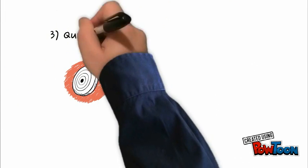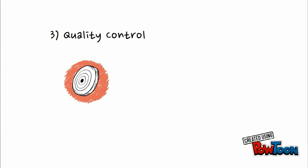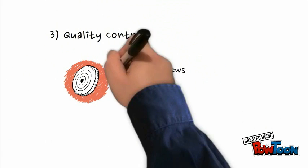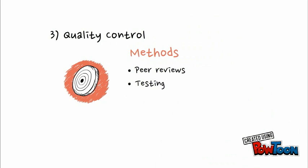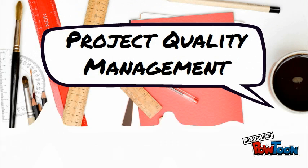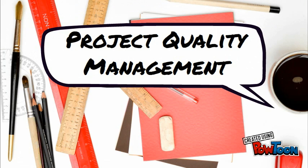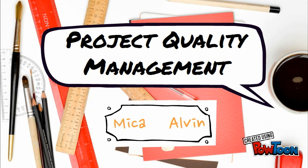Performing quality control is verifying that the product meets the quality requirements. Peer reviews and testing are two methods used to perform quality control, and the results will determine if corrective action is needed. And that's it for quality management — stay with us for the next module. By Micah and Alvin.